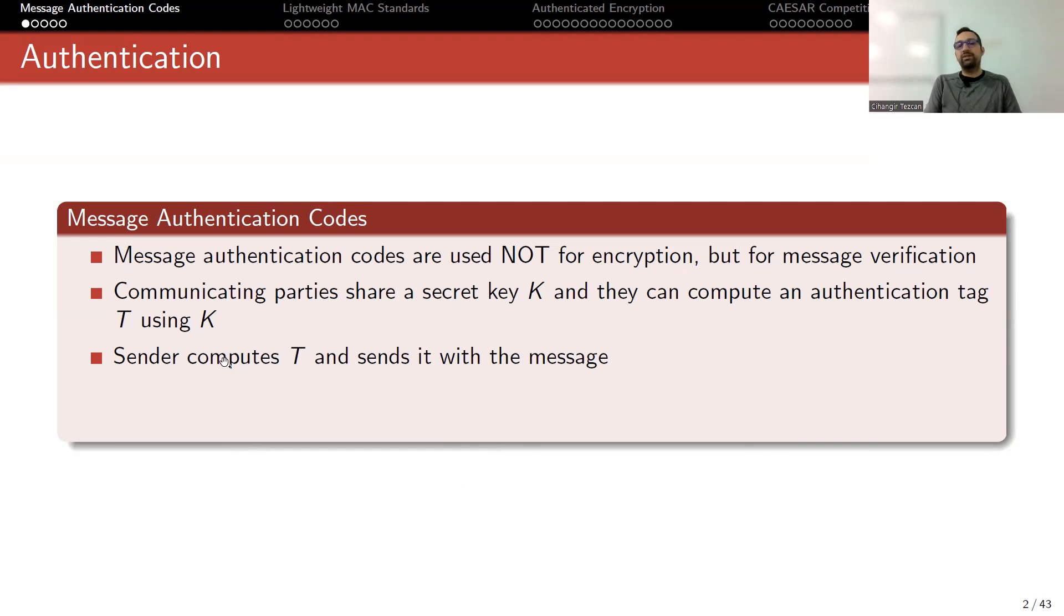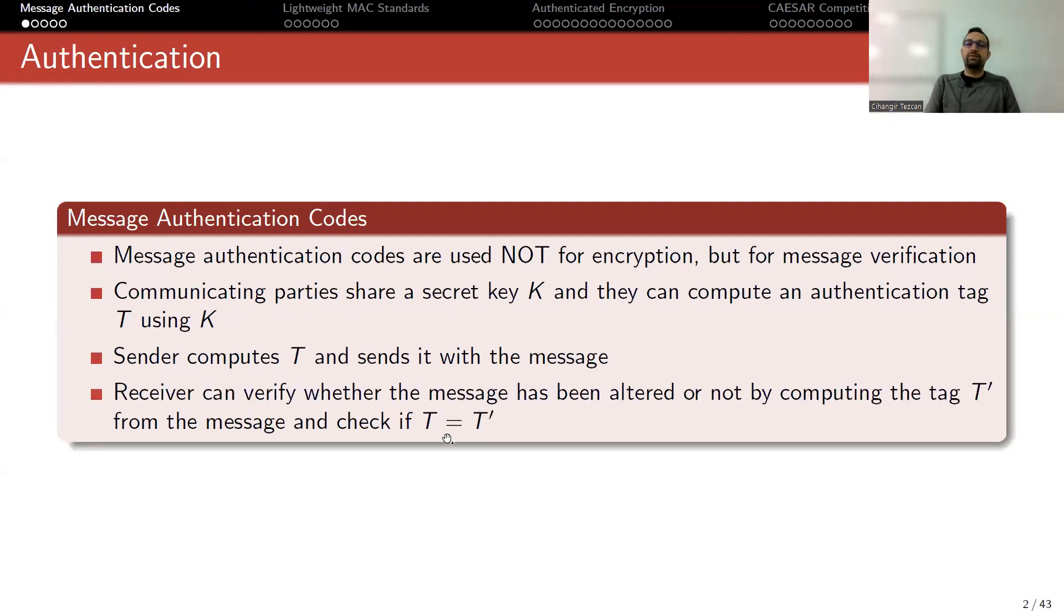When the person receives the message and the tag, they also calculate the tag of this message using the secret key. If that tag matches this one, then this means that the message is not modified during transit. So the receiver can verify whether the message has been altered or not by computing the tag T prime from the message and check if T equals T prime.